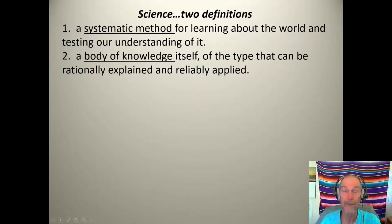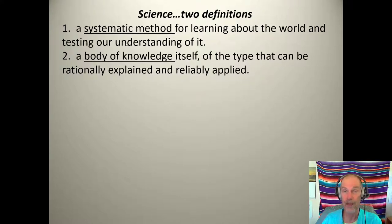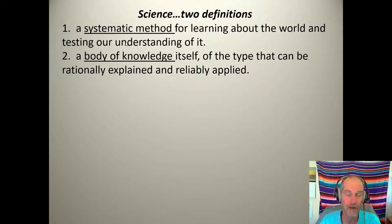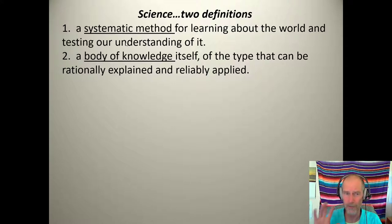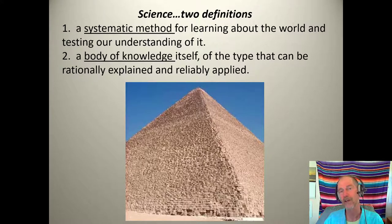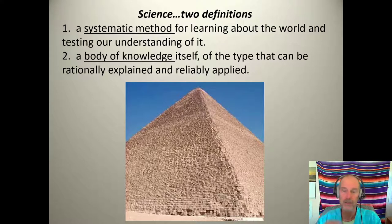Science is also a body of knowledge of the type that can be rationally explained and reliably applied. So science is both a method of getting information and the information itself after it's been acquired. When people say 'the science of vaccinations is well known,' they mean the body of knowledge. When someone says 'let's do some science to figure out this new virus,' they mean the systematic method. Science builds upon itself — someone discovers one thing, the next person builds on that.